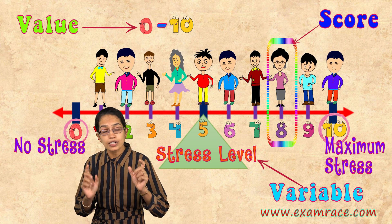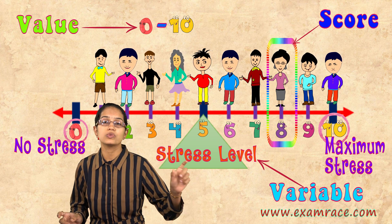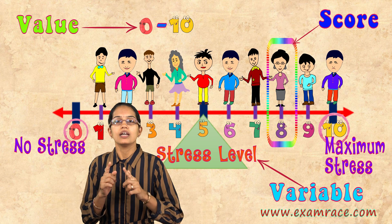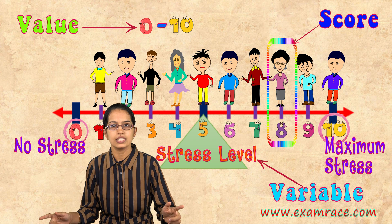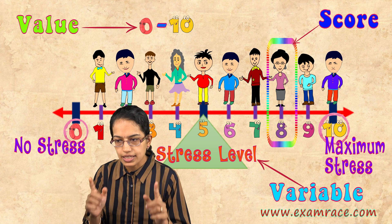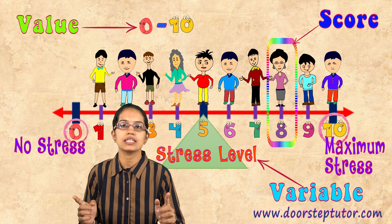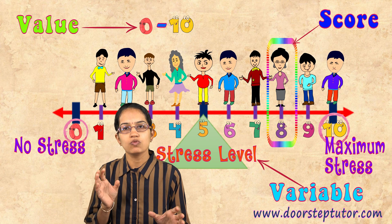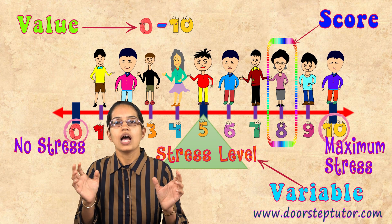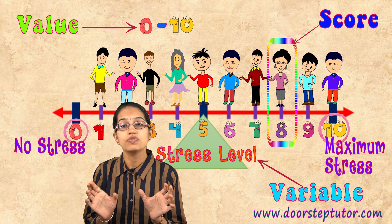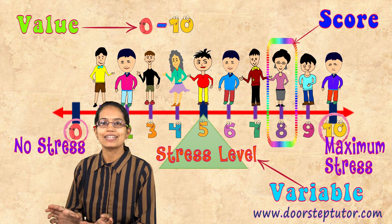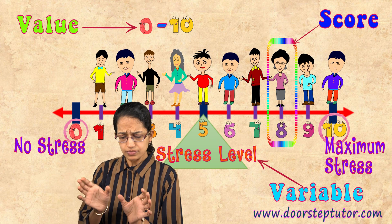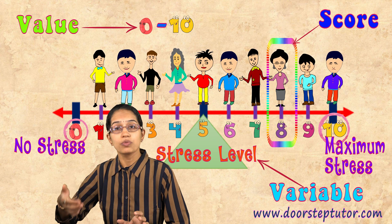So a score is a particular person's value. Value is the range or category in which the variable varies, and a variable is any characteristic which can be assigned different values — which has the capability to vary. Variables, values and scores are the basis on which we understand statistics further, as this is the foundation for the various techniques to measure.